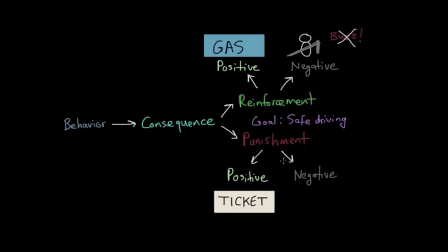Negative punishment means something is being taken away in an effort to decrease the chance that a behavior will occur again. So if you want to decrease unsafe driving by taking something away, one extreme example is when people consistently break the law and show they're not safe drivers, courts will take their license away. And by taking away their license, they're decreasing the chance that they can perform more unsafe driving.